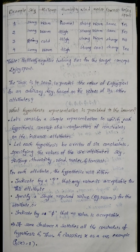Consider a simple representation in which each hypothesis consists of a conjunction of constraints on the instance attributes: sunny, warm, strong, warm, same. Let each hypothesis be a vector of 6 constants: sky, temperature, humidity, wind, water, and forecast — specifying the value of the 6 attributes.